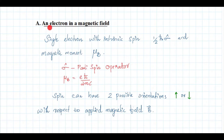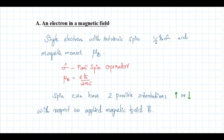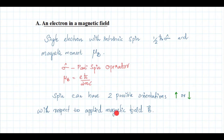The first example is an electron in a magnetic field. A single electron, which has an intrinsic spin (half ℏσ) and magnetic moment μ_B, is placed in an external magnetic field. The intrinsic spin is (ℏ/2)σ, where σ is the Pauli spin operator. This spin can have two possible orientations, either up or down, with respect to an applied magnetic field B.